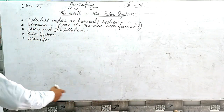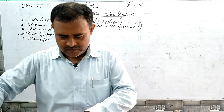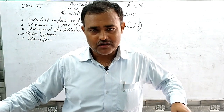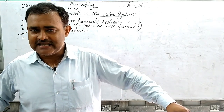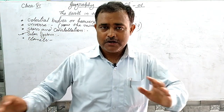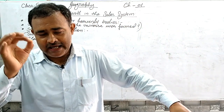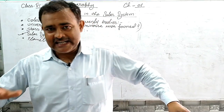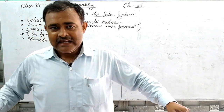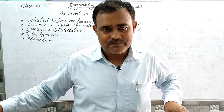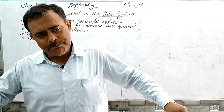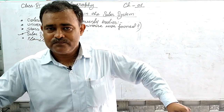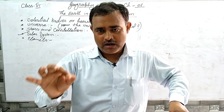Now let us go to the solar system. 'Solar' comes from the Latin word meaning 'belonging to the sun.' The planets, satellites, asteroids, and meteors together are called the solar system. The Sun is the center of the solar system, and all planets — including meteors and asteroids — revolve around the Sun, thus forming the solar system.